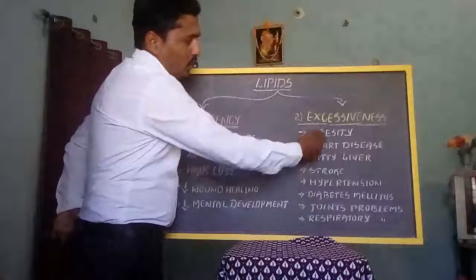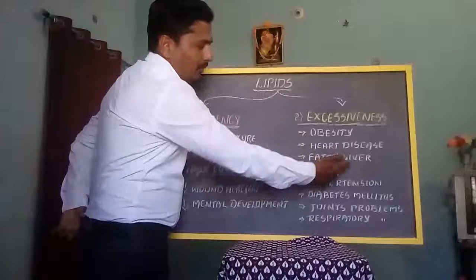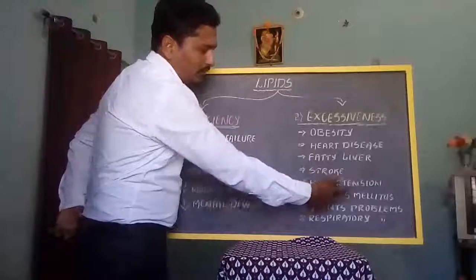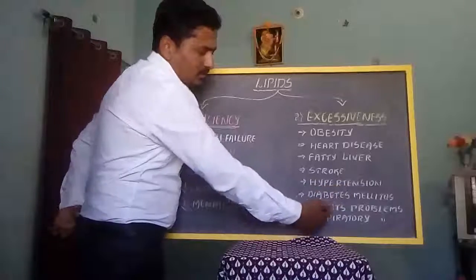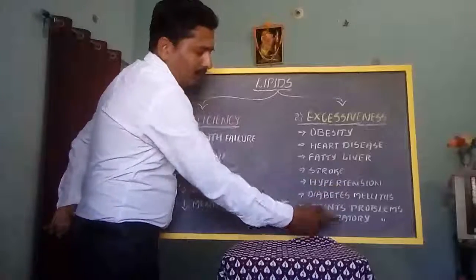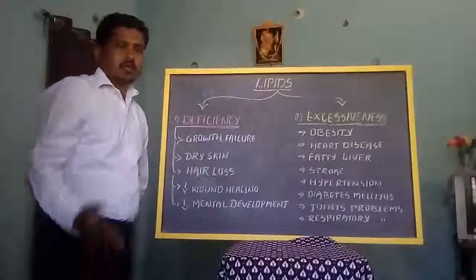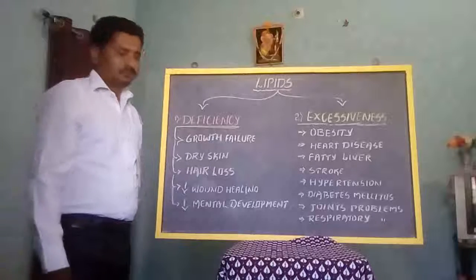To summarize, the diseases related to excessiveness of fat are: obesity, heart disease, fatty liver, stroke, hypertension, diabetes mellitus, joint problems, and respiratory problems. Thrombophlebitis can also occur. These are the disorders or diseases related to excessive fat.